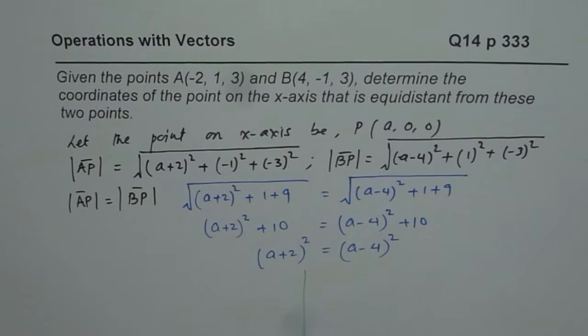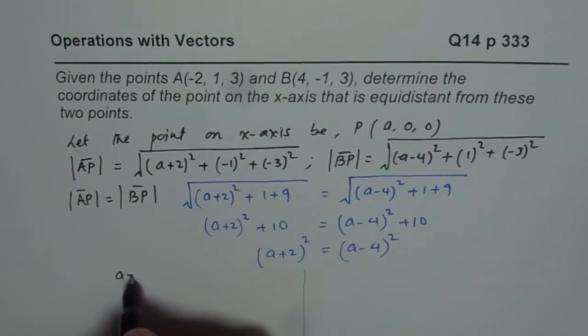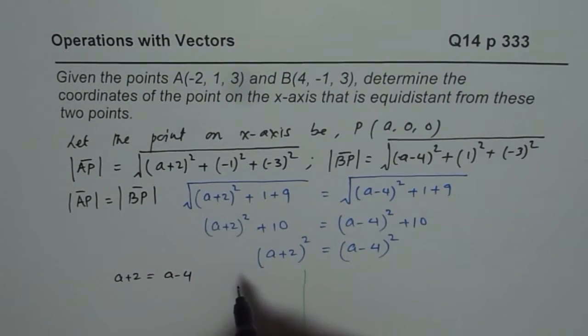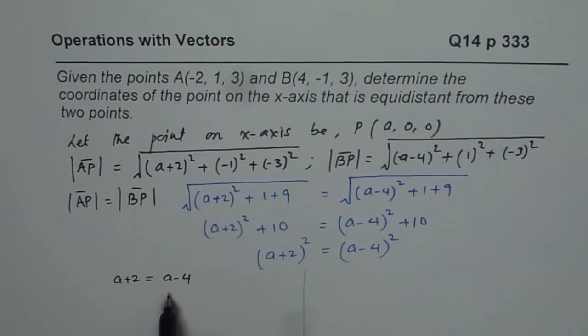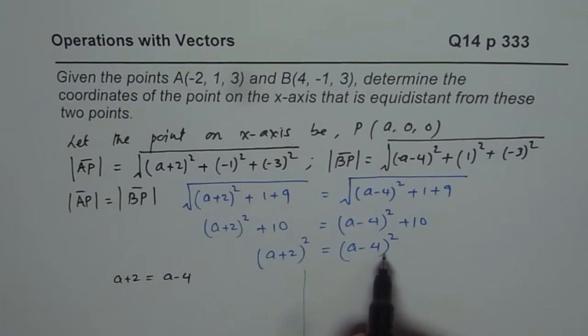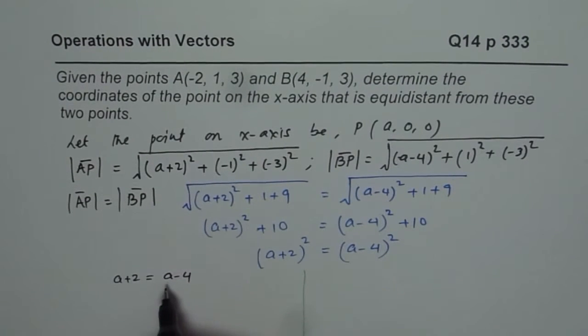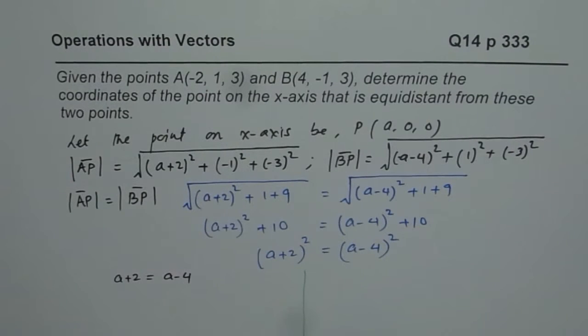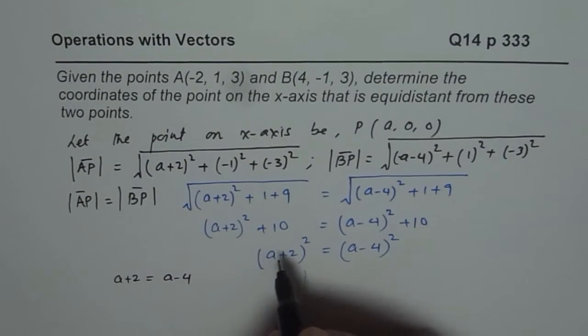What I will do here is, do as normal, which is, we can write this as a + 2 equals to a - 4. And if I do that, a + 2, a - 4, then what do I get? I get 2 equals to -4, but that doesn't work out. So there is no solution if you do like that. So let us expand this.